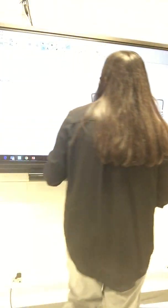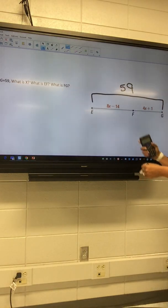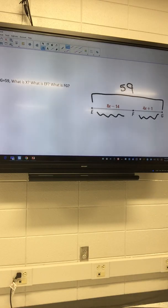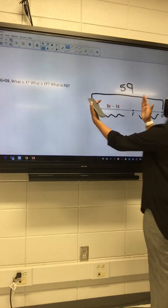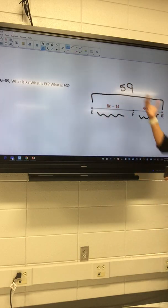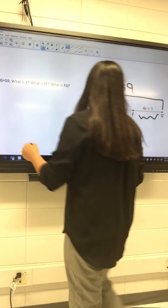Okay, the whole thing is 59. It wants to know what is x, what is EF (which means this), and what is FG (that means this). So the segment addition postulate says if you take this chunk and this chunk, it will equal the entire chunk. We are given the entire chunk length.